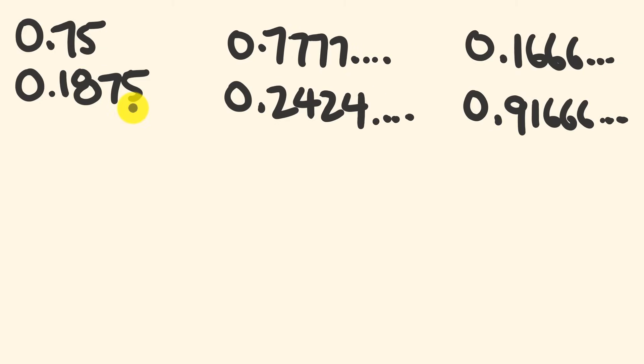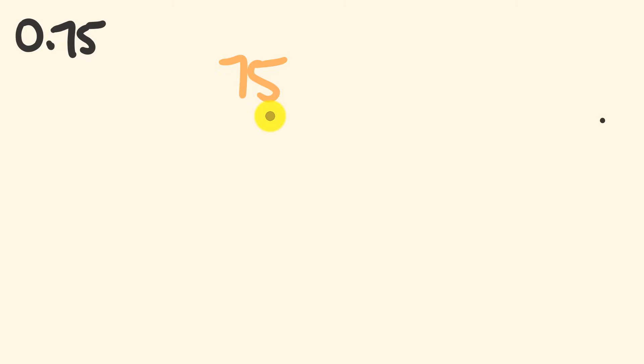Anyway, as I said, we'll start out nice and easy by looking at how to convert terminated decimals across to their fractions. So say for instance, we wanted to convert 0.75 across to its equivalent fraction. This is a pretty simple thing to do.